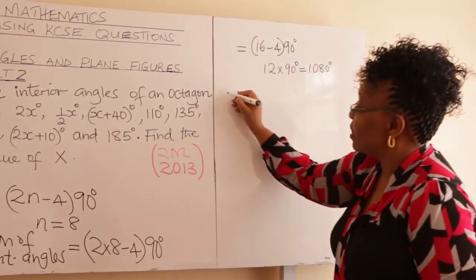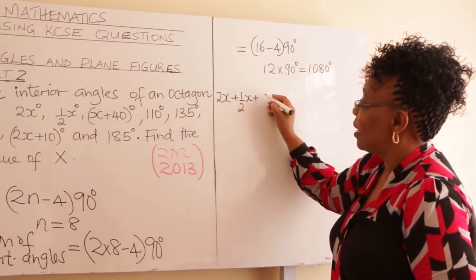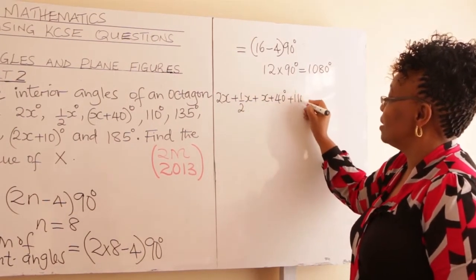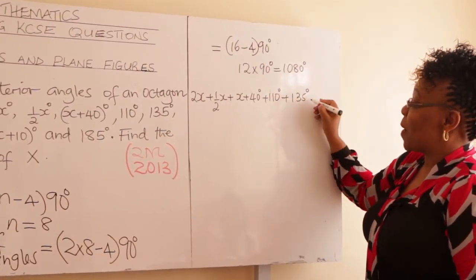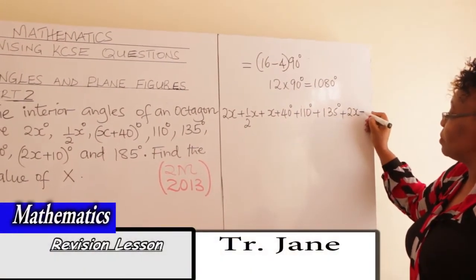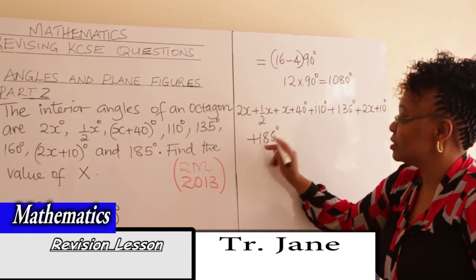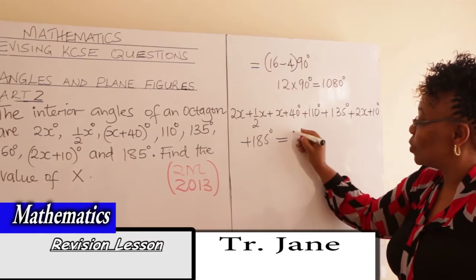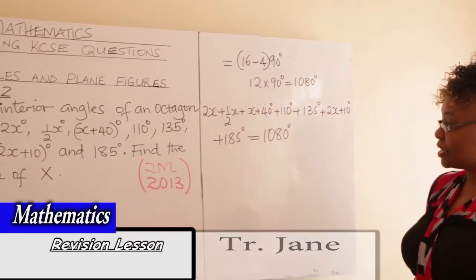Add all the angles together: 2x + half x + x + 40° + 110° + 135° + 160° + 2x + 10° + 185°. All eight angles add up to 1080 degrees.